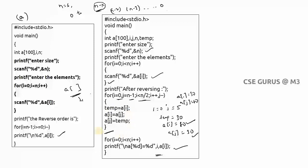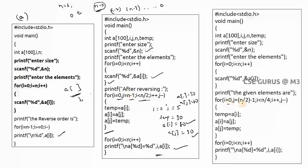For the third question — reversing only the first half — instead of using the full n elements, we limit j to the first half. So i starts from 0 and j starts from n/2 - 1. For six elements, n/2 - 1 = 2, so only indices 0, 1, 2 are involved. The loop continues while i < n/4, with i++ and j--. For three elements, index 0 swaps with index 2, and index 1 remains as it is.